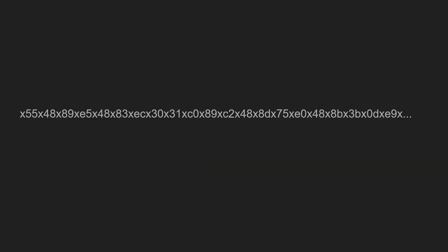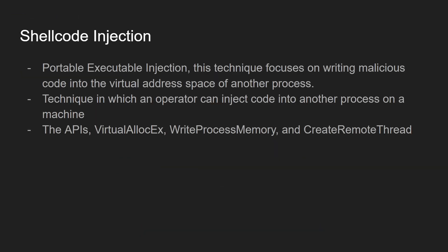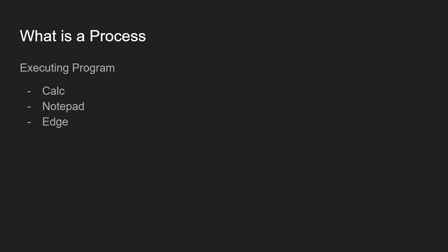So what is shellcode injection? Now that we know what shellcode is — also known as portable executable injection — it's a technique that focuses on writing malicious shellcode into the virtual address space of another process. Red teamers or hackers inject code into another process on a machine, and they usually use the Windows API. The three main functions are VirtualAllocEx, WriteProcessMemory, and CreateRemoteThread.